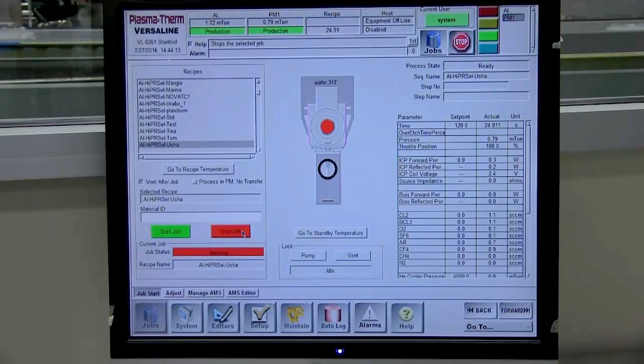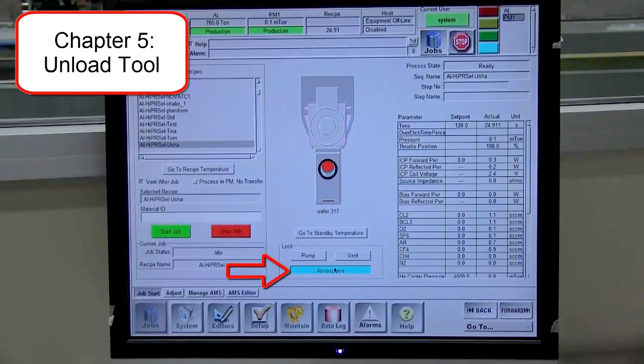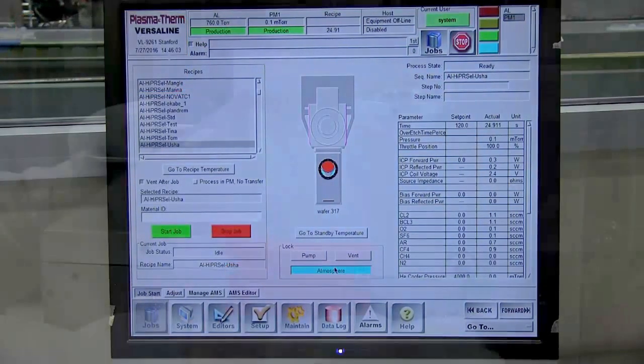When processing is complete, wafers will be transported back to the load lock, and the load lock will be vented if Vent After Job was selected. Once it is indicated that the load lock is at atmospheric pressure, remove the wafer from the load lock chamber.